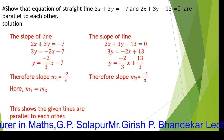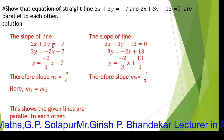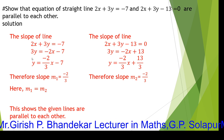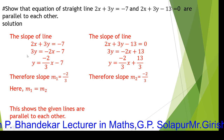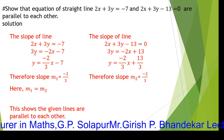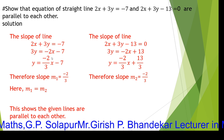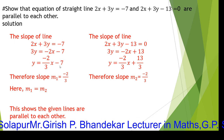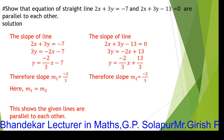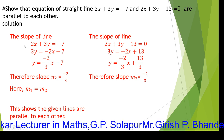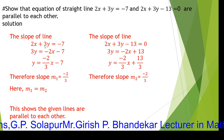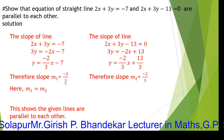For the first line 2x plus 3y equals minus 7, keeping 3y as it is and transforming 2x to the other side, we get 3y equals minus 2x minus 7. The coefficient of y is 3, so we divide throughout by 3. We get y equals minus 2 upon 3 times x minus 7 by 3. The coefficient of x is minus 2 upon 3, so the slope of the first line is minus 2 by 3.